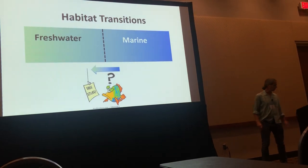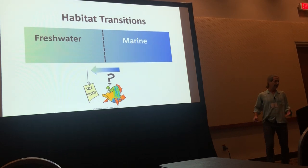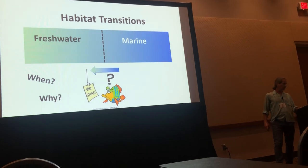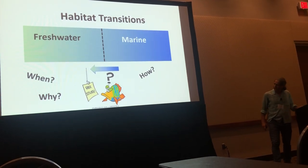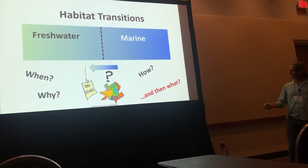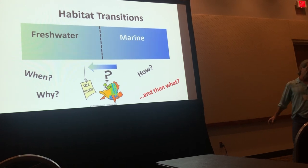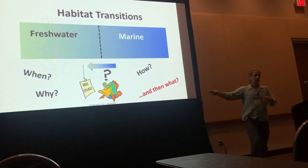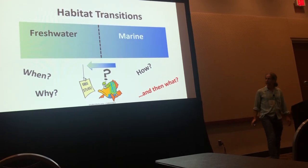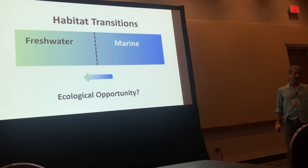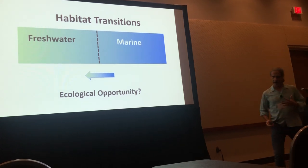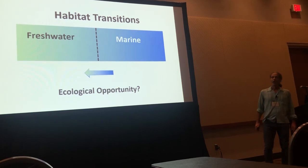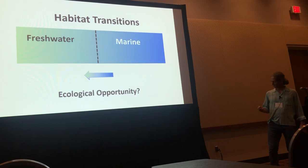When we think about habitat transitions, we can ask quite a few questions: how these transitions happen, when they happen, and more deeply why. What I'm going to talk about today mostly is when, because we're going to see two different groups that experience transitions at different times in geological history, and then what happens once these transitions occur — what the consequences are. There's been a lot of talk about ecological opportunities when new lineages invade new habitats — they can diversify — and this may have an effect on macroevolutionary patterns.